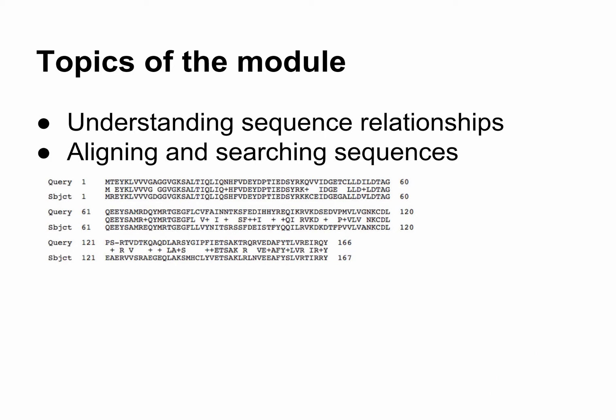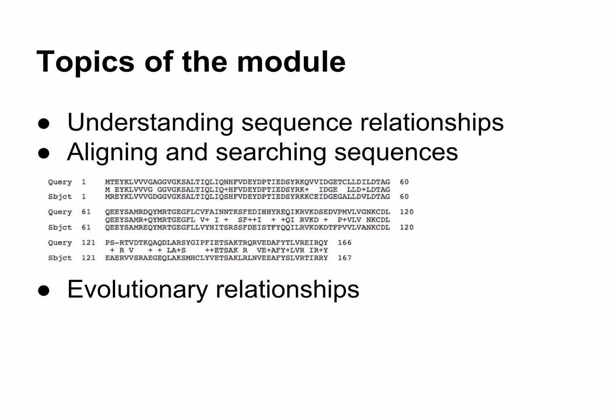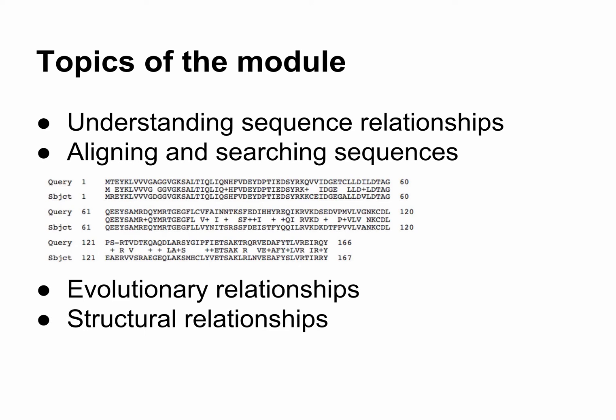In the second half of the module, we'll branch from sequence alignment and search to questions of evolution, protein structure, and pathways. You can build an evolutionary tree from sequence information alone. You can sometimes take a sequence and, using the protein structure of a related sequence, predict the structure for the protein that corresponds to your sequence. You'll learn how, and with a group of classmates, you'll predict structures for your unknown sequences.